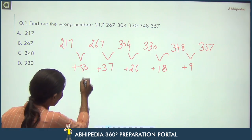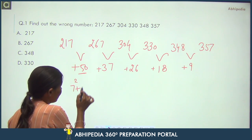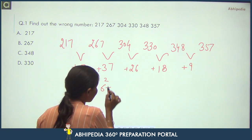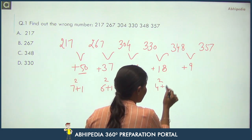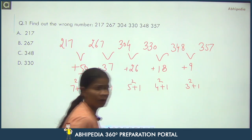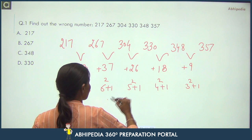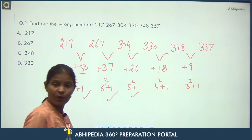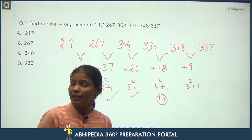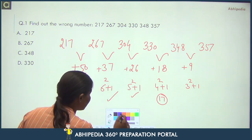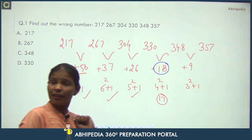Looking at the differences: 50 means 49+1, which is 7²+1. Then 6²+1 = 37, 5²+1 = 26, 4²+1 = 17, 3²+1 = 10. So the pattern in differences is n²+1. The difference following this pattern: 7², 6², 5², 4², then 3²+1 = 10. But here instead of 17 (4²+1), the difference shown is 18.